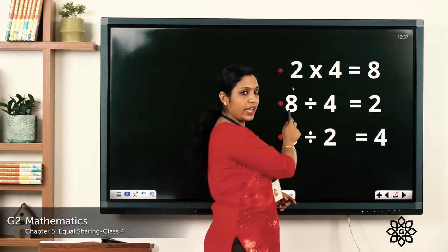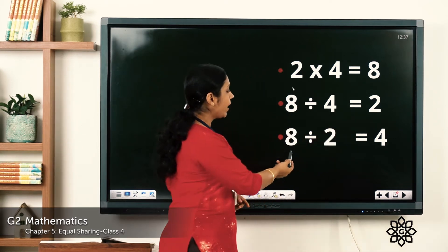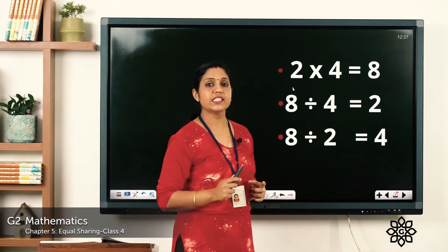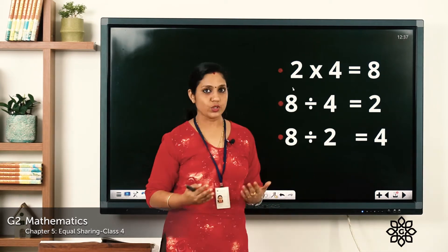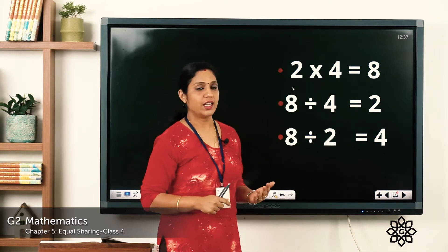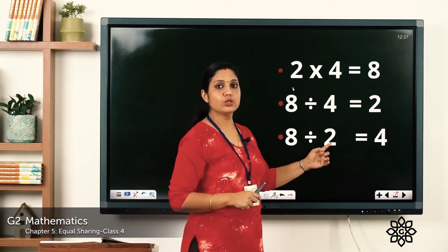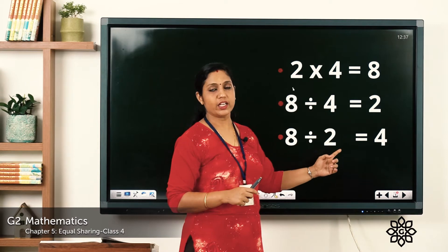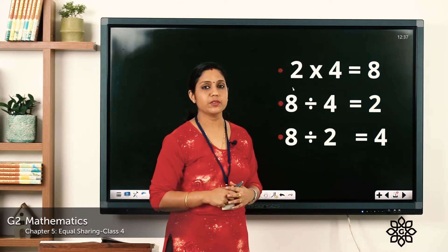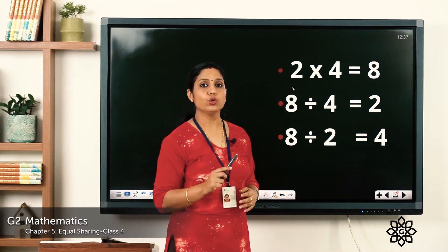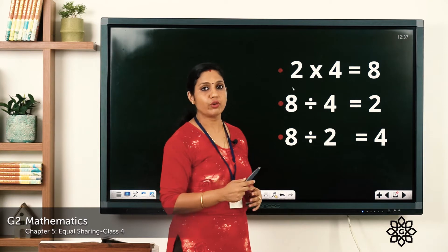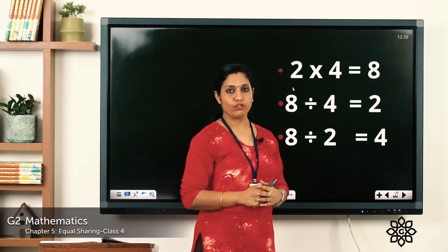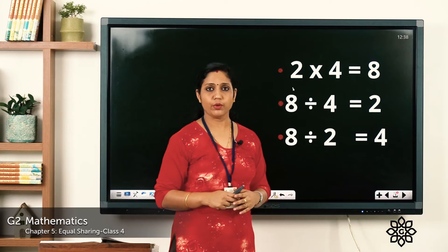Now let's verify 8 divided by 2 is equal to 4 using the table of 2: 2 ones are 2, 2 twos are 4, 2 threes are 6, 2 fours are 8. So how many times did we reach 8? 2 fours are 8, that is 2 into 4 is equal to 8, so we write the answer 4.